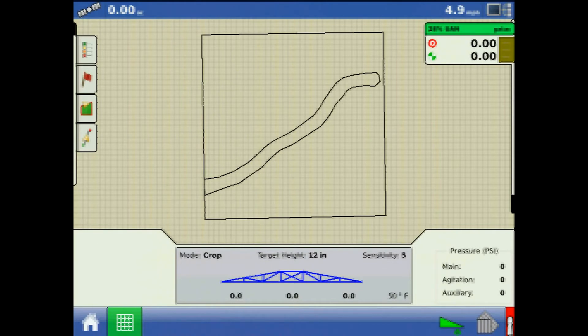Also from the run screen, the boom height control options button displays active mode, target height, sensitivity, numbers indicating the distance between boom section and target, and ambient outside temperature.